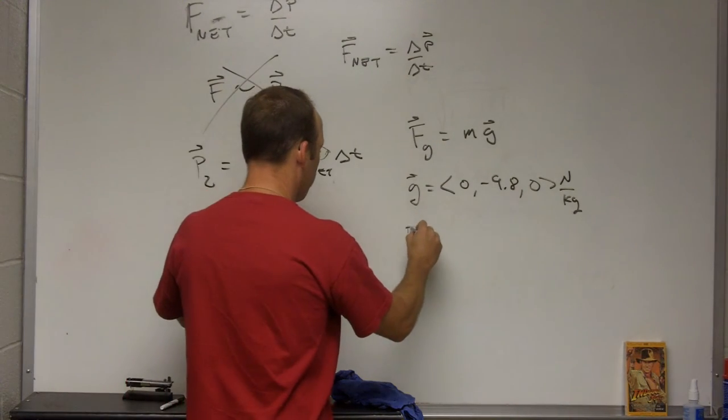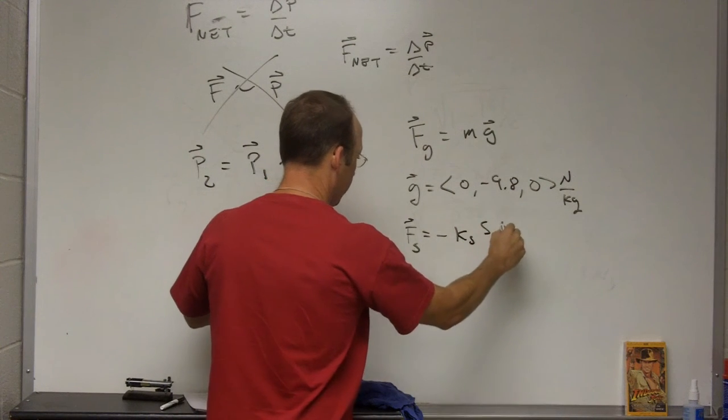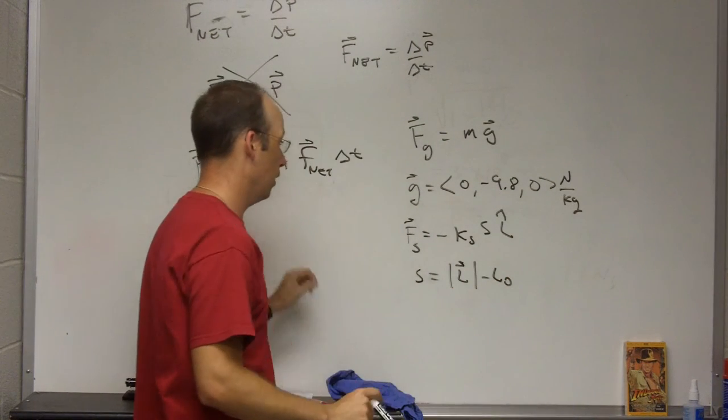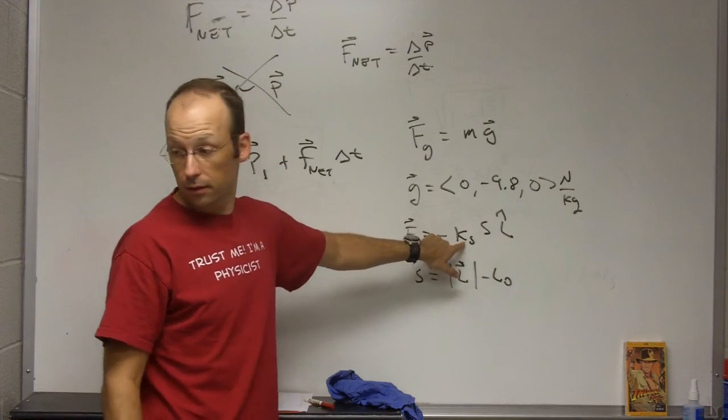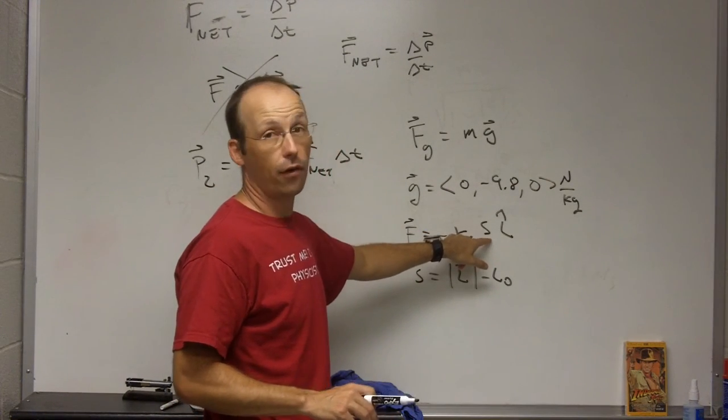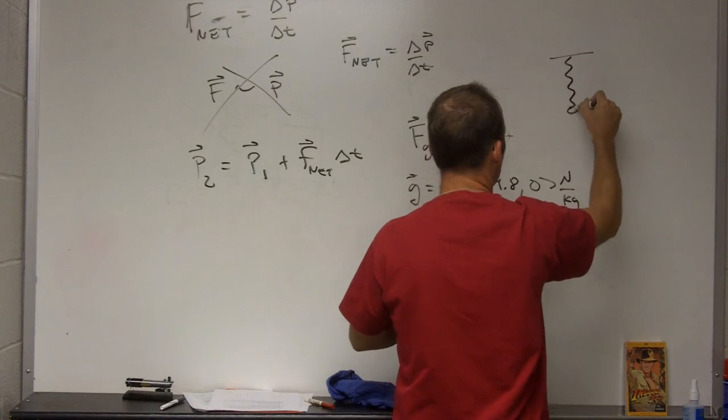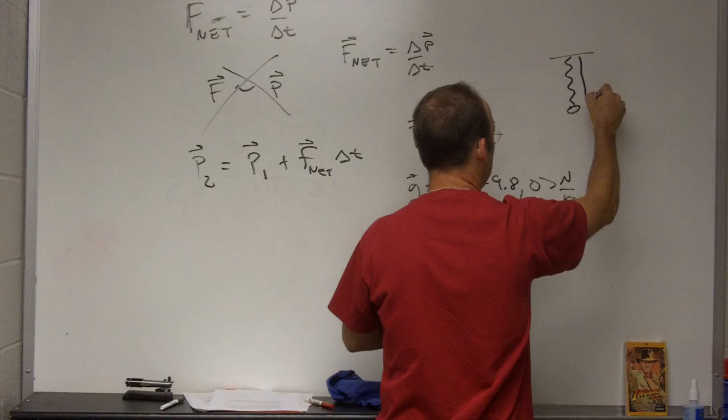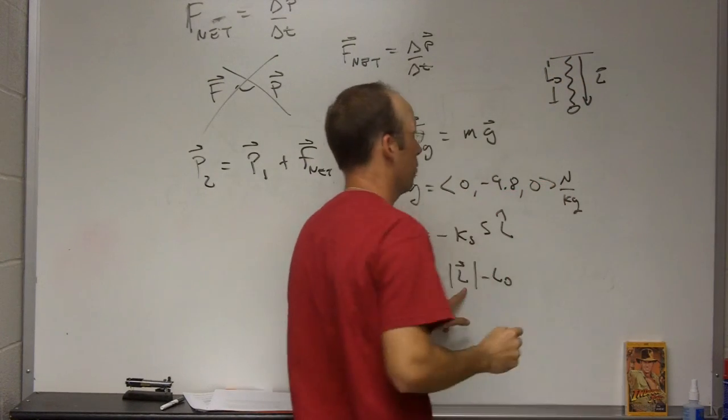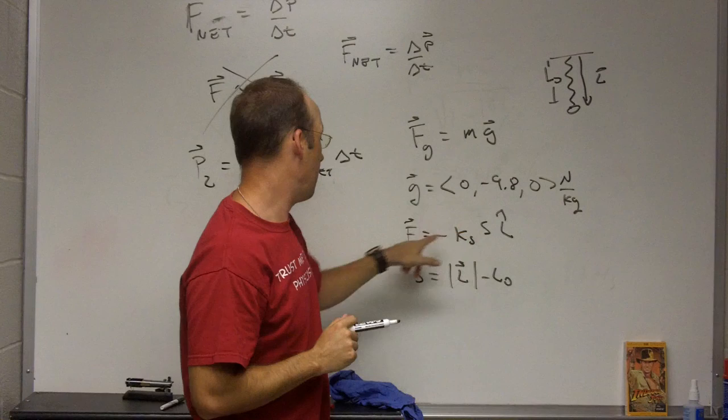The other force we looked at was the force due to spring, F spring. It's going to be, the book wrote it as negative KS, S, L hat, where S is equal to L minus L naught. So KS is called the spring constant, and it is a measure of how stiff that spring is. S is how far that spring has stretched. L is a vector if I have a typical spring with a mass on the end of it. L is the vector from the place where it's attached to the place where it ends, and L naught is the length of the spring if it weren't stretched or compressed. So this gives you how much it's compressed. L hat is a unit vector in the direction of the spring. That makes this a vector.